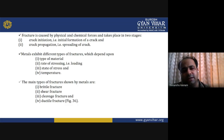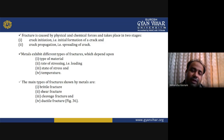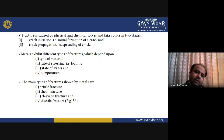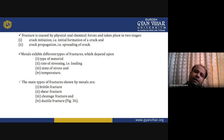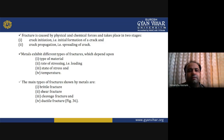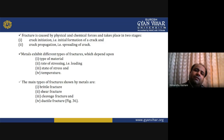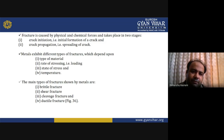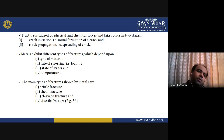Fracture is caused by physical and chemical forces and takes place in two stages. The first stage is crack initiation — the initial formation of a crack — and the second is crack propagation, the spreading of the crack. In crack initiation, a crack forms and if forces are applied, propagation takes place. To avoid fracture, we should avoid these two stages; if the initial stage is avoided, the second will be automatically avoided.